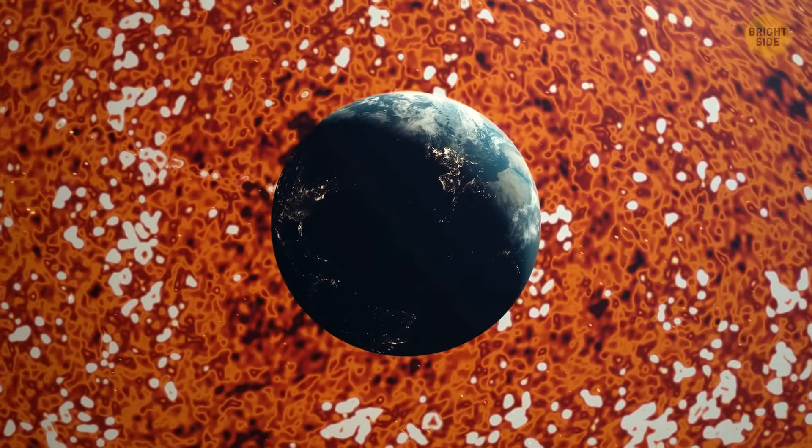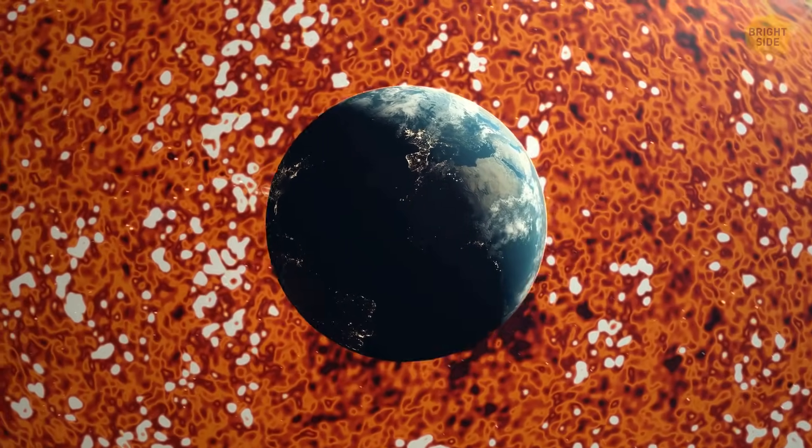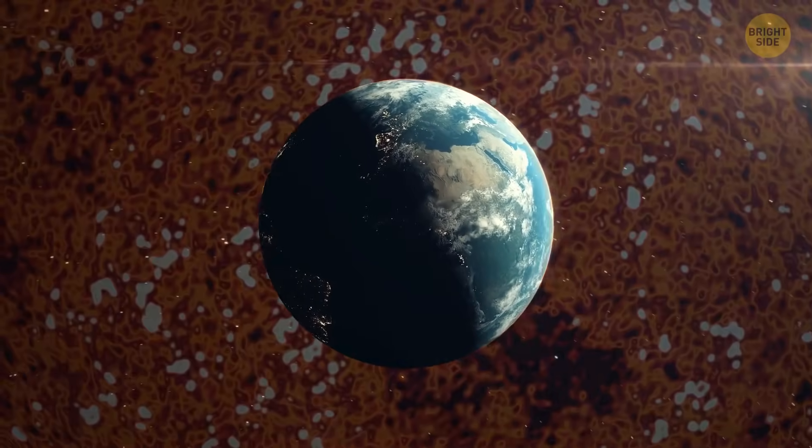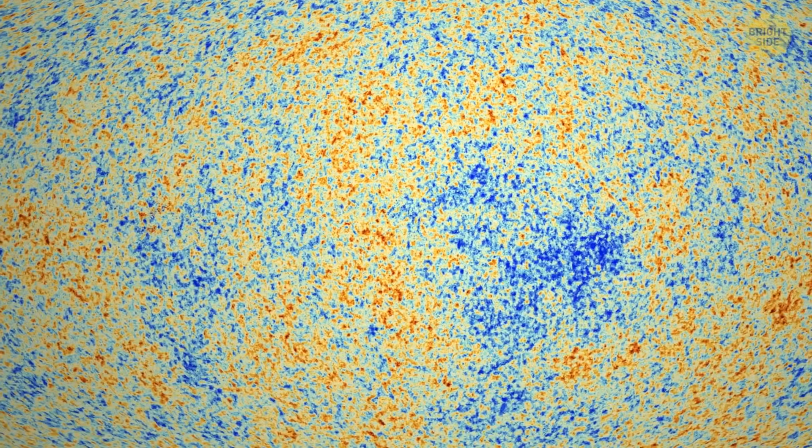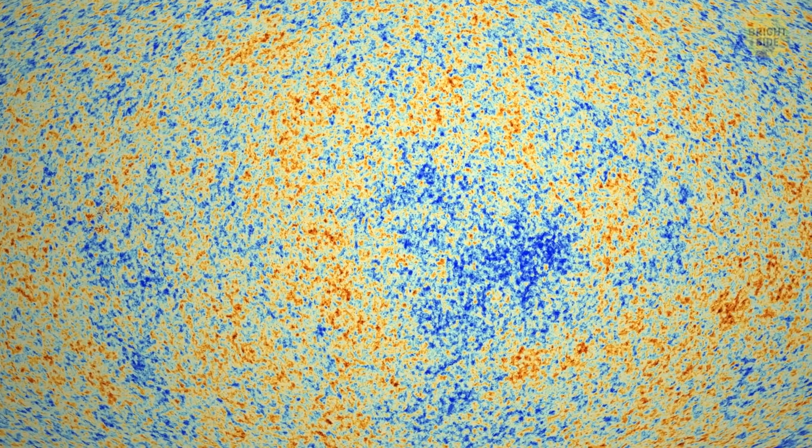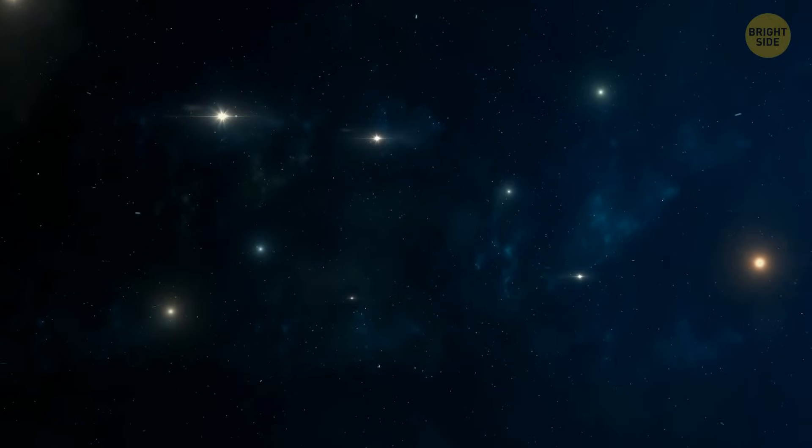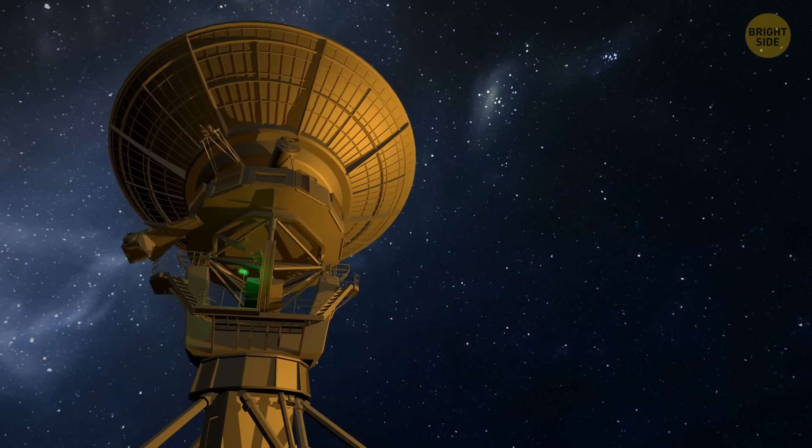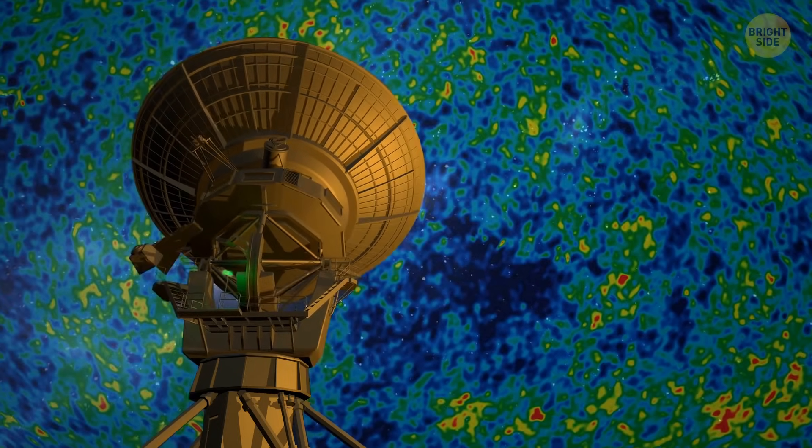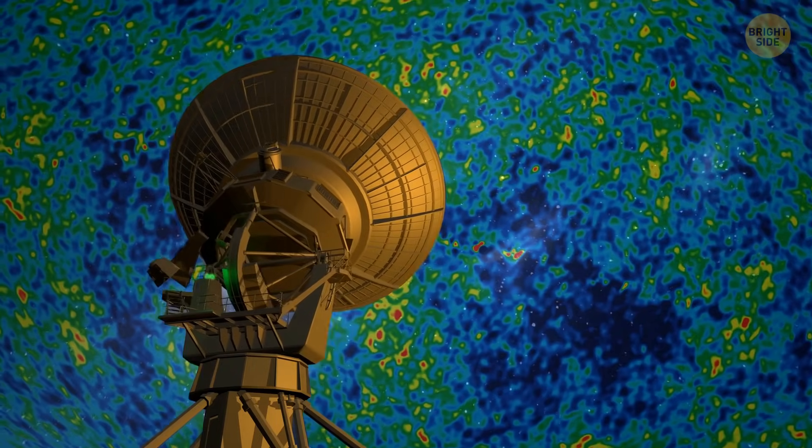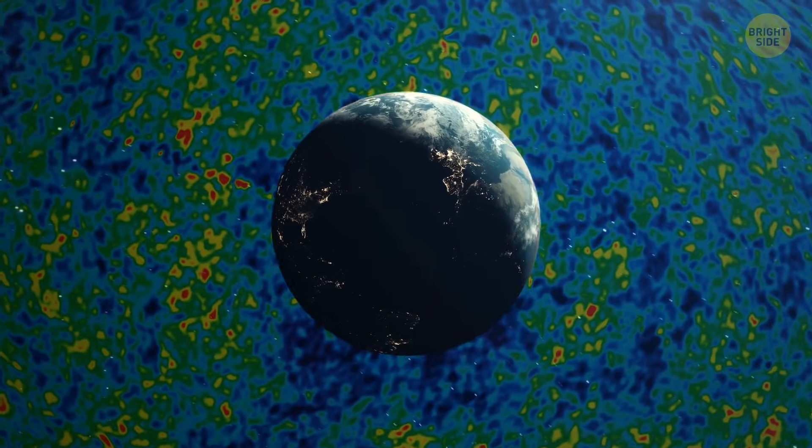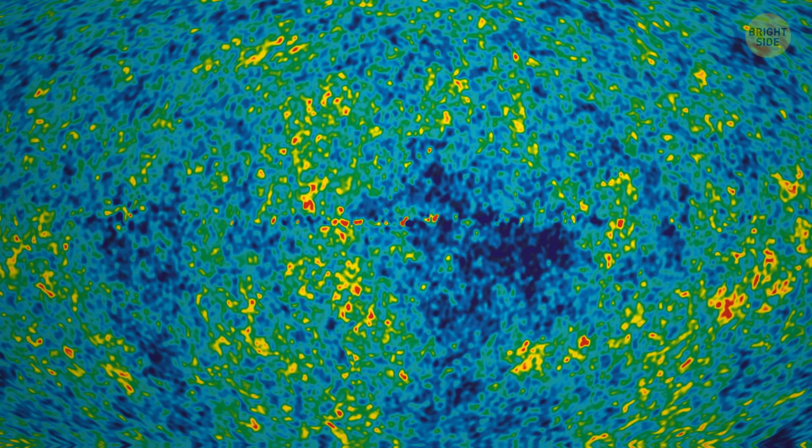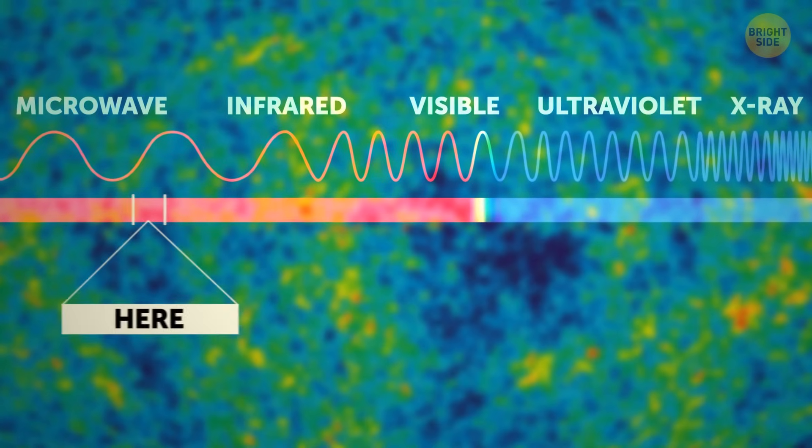Now, the CMB is like a faint, glowing light that fills up the entire universe in every direction. These clues can help us understand how the universe evolved into what it is today. When you look through a regular telescope, the space between stars and galaxies seems pretty dark. But with an amazing radio telescope, we can actually detect that this empty, dark space is filled with a super faint and even glow. This glow is all around us, and it's not coming from any star or galaxy. This is the cosmic microwave background, and it's strongest in the microwave part of the radio spectrum.